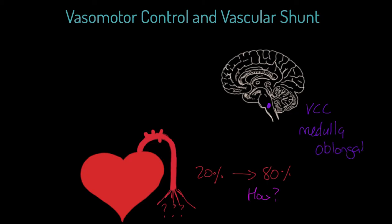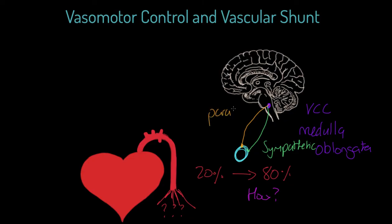If you've looked at the control of heart rate, you've probably already got a good idea of what's going on here. This system has the capacity to provide sympathetic stimulation and parasympathetic stimulation of that arteriole or pre-capillary sphincter. Sympathetic stimulation will increase vasomotor tone - it will cause the arteriole to squeeze inwards - whereas parasympathetic stimulation will cause vasodilation. It is this vasomotor control centre controlling the level of vasomotor tone in these areas.